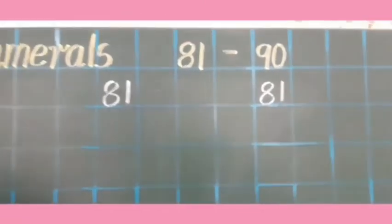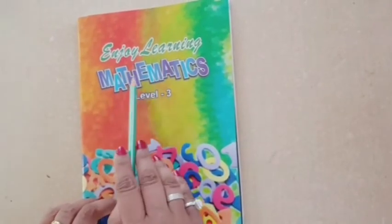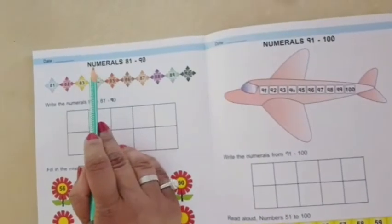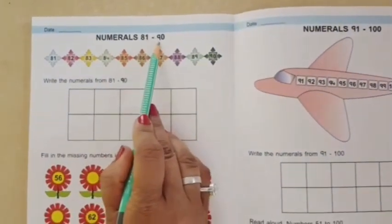Okay kids. Children in your ELM book you have to open your page number 44. There is a heading numerals 81 to 90.